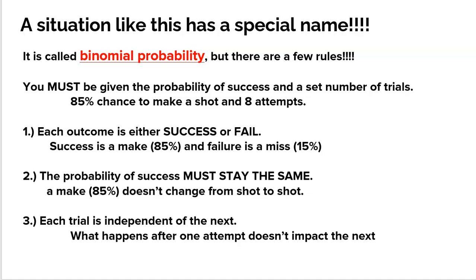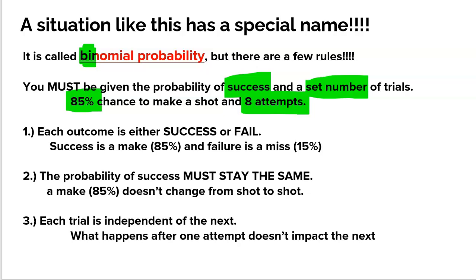How do you recognize that you have one of these special situations? It's actually kind of simple. The prefix 'bi' means two, and when you are in a binomial situation, you must be given the probability of success and a set number of trials. You've got to be given those two things — that's where it gets the name binomial from. In our particular case, that's the 85% chance to make a free throw, and free of charge, the 15% chance she misses. We're also given a set number of trials — in this case, eight shots.